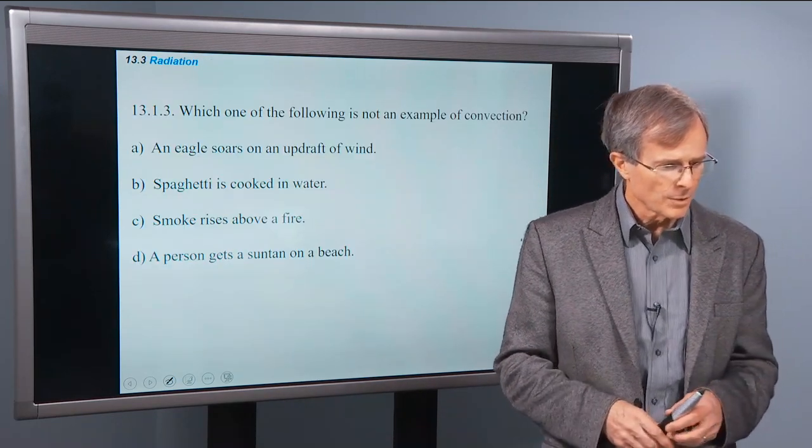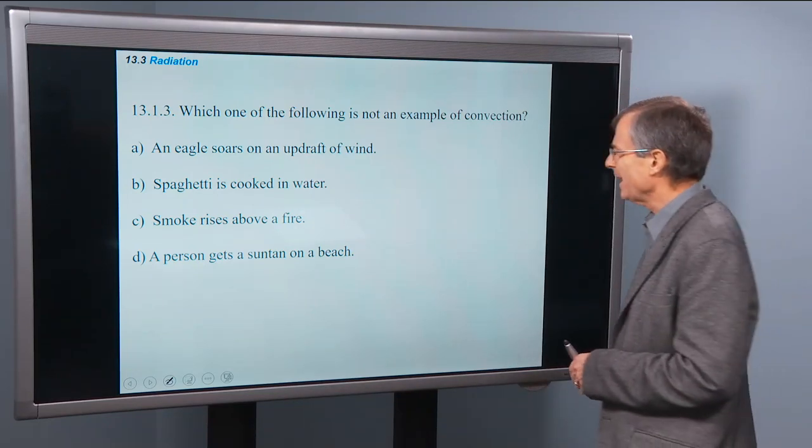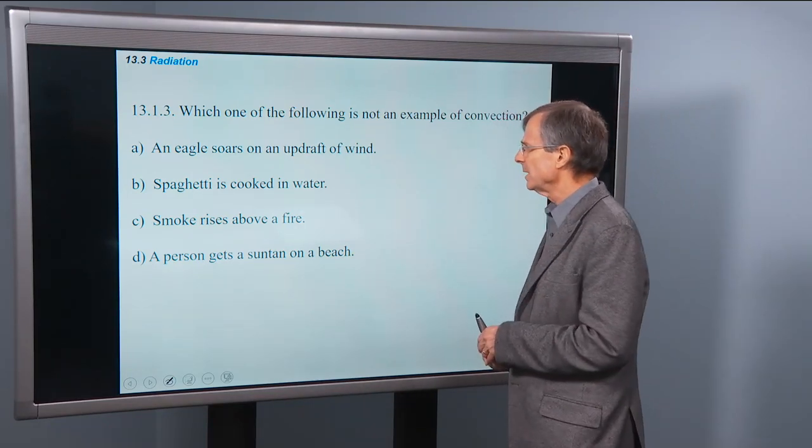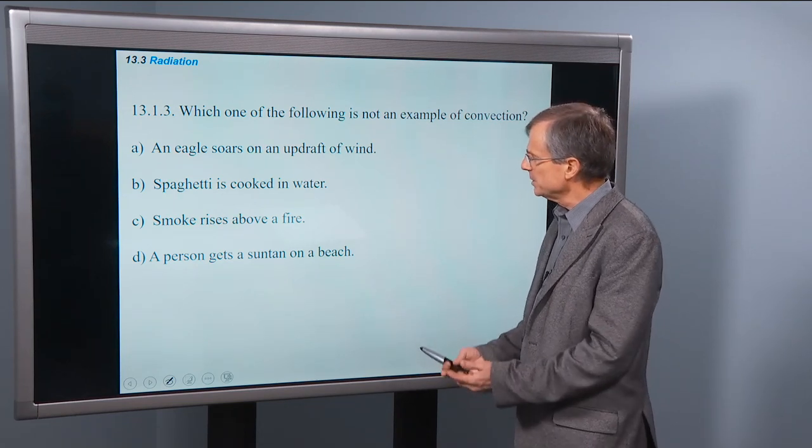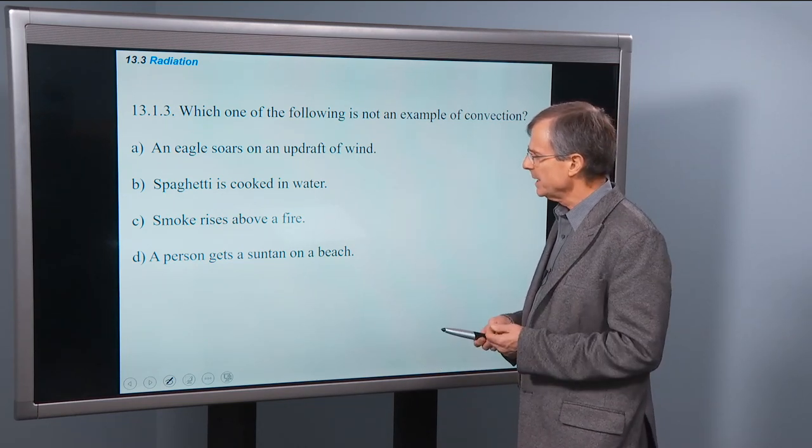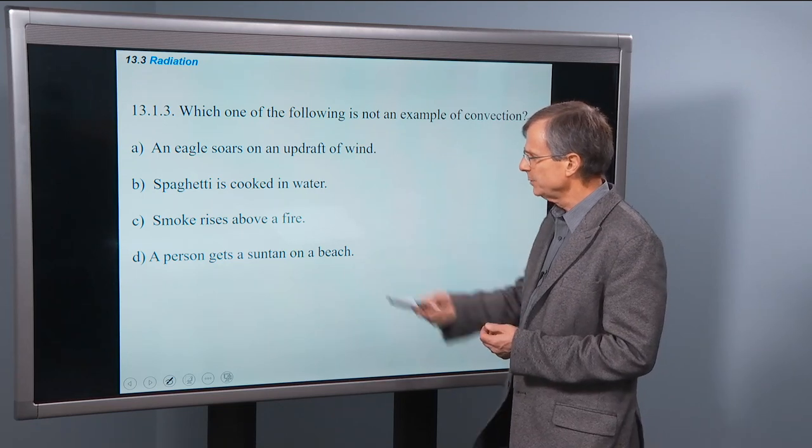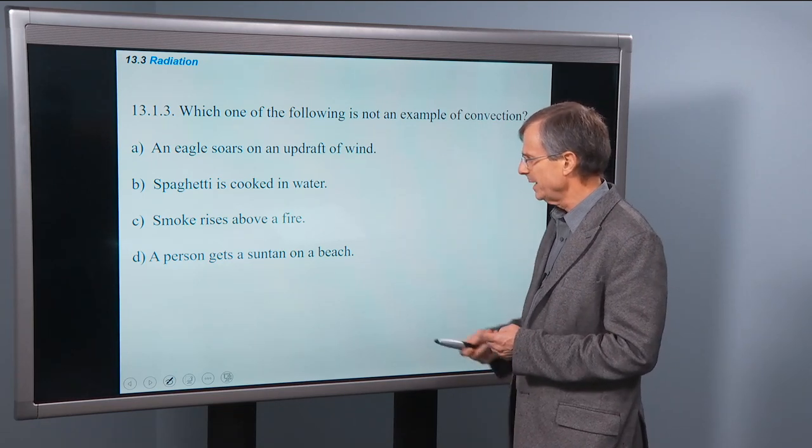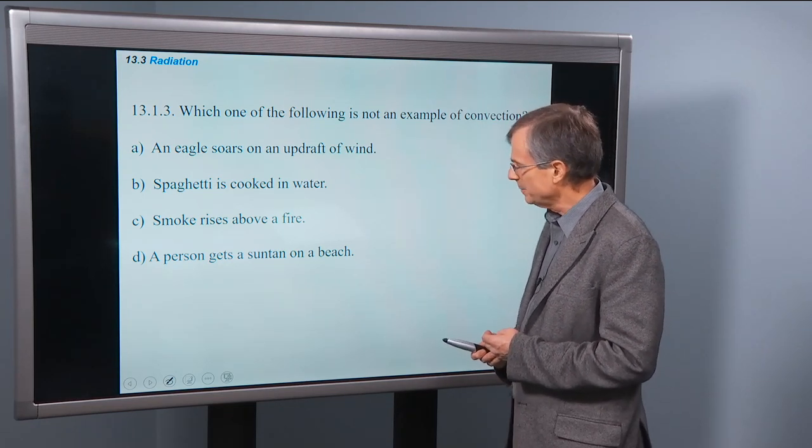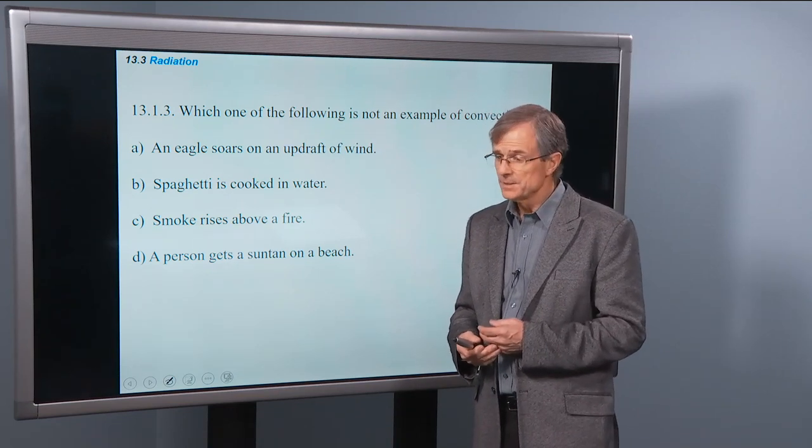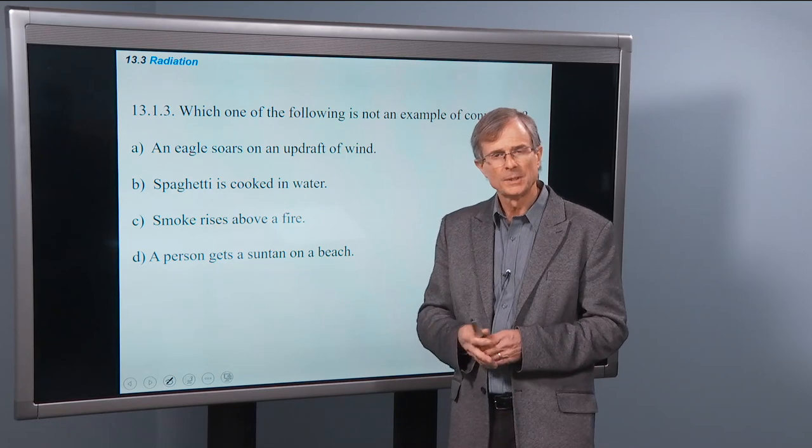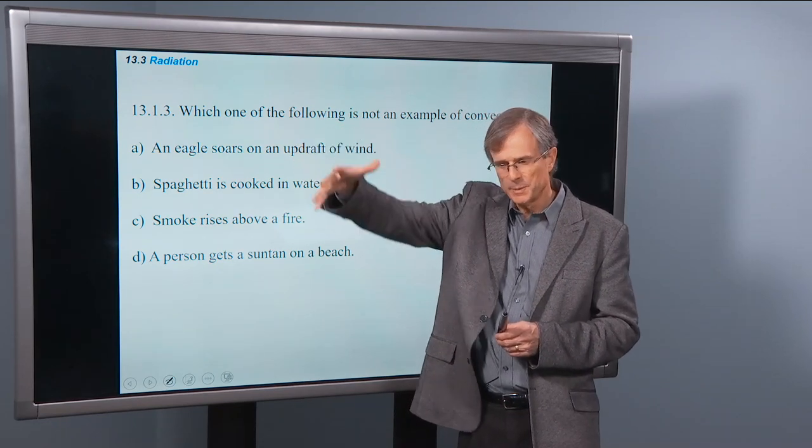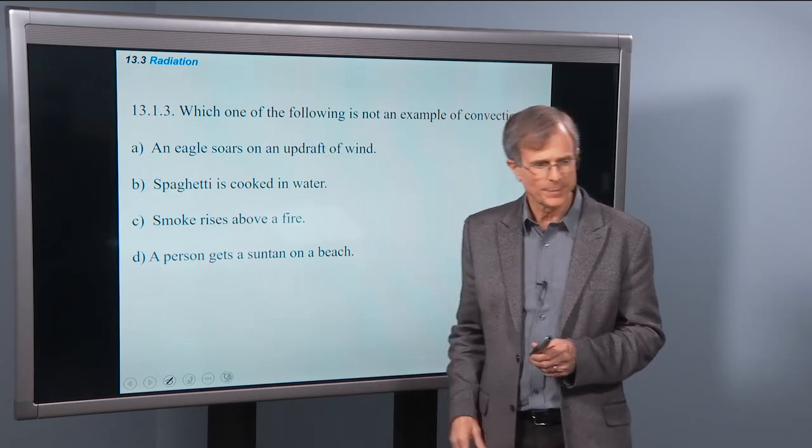Which one of the following is not an example of convection? An eagle soars on an updraft of wind - well, convection is fluid motion. Spaghetti is cooked in water - that's got some fluid motion. Smoke rises above a fire. A person gets a suntan on a beach - what about that? Suntan is not convection, not conduction. It's radiation. Straight from the sun at the speed of light hitting your skin.